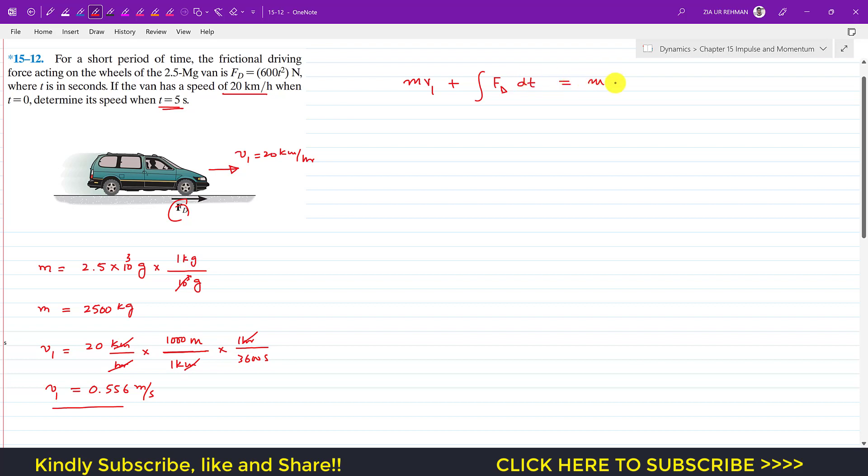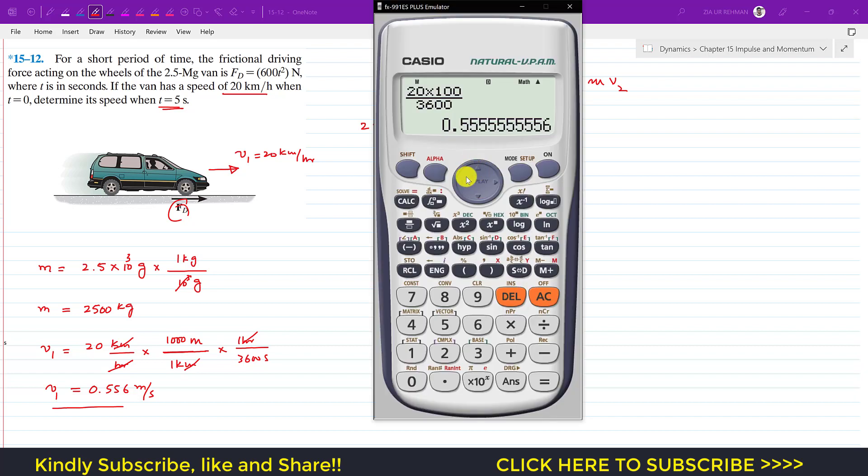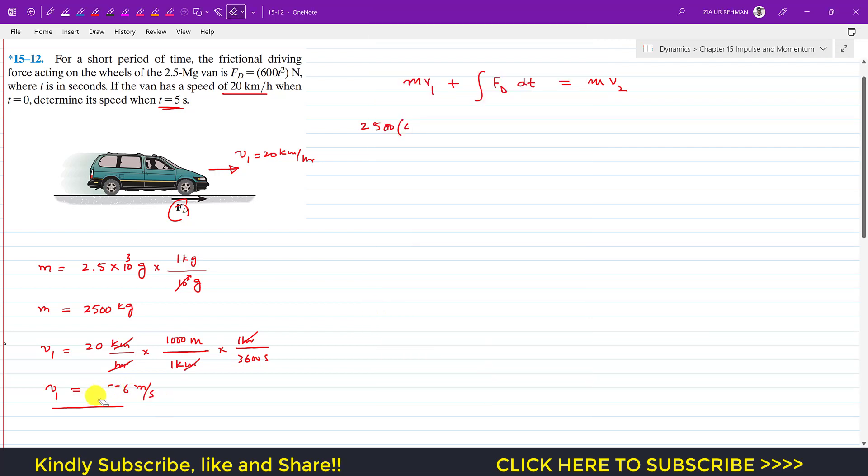So we will write the integral of F dt, and this will be equal to the final momentum, which is mass times v₂. So the mass is 2500 times 5.556 plus the drag force is 600t².